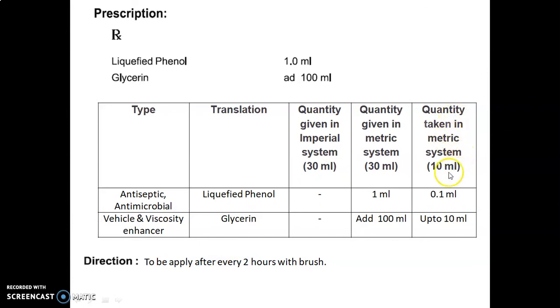First, liquefied phenol used as antiseptic/antimicrobial - quantity given for 30 ml is 1 ml, multiply with factor to get 0.1 ml. Then glycerine used as vehicle and viscosity enhancer, add up to 100 ml. For quantity taken, it should be added up to 10 ml.